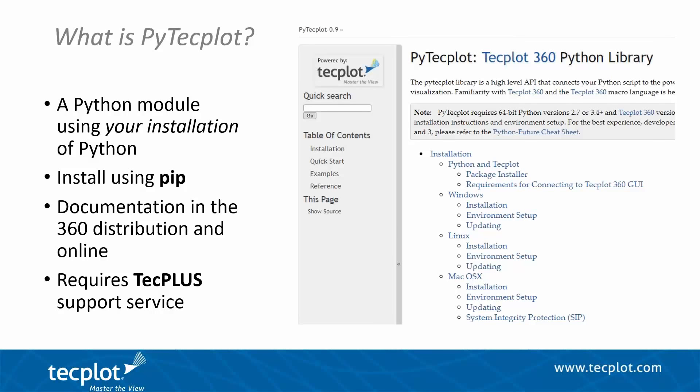PyTecplot is a Python API to Tecplot 360. It's a separate module that you install using your Python installation. We support Python 2.7 and 3.4 and newer. You can do a simple installation using the pip command — if you're familiar with installing other Python modules, it's quite straightforward. It does require an installation of Tecplot 360, and it also requires active maintenance through a Tekplus support contract. Documentation is available in the Tecplot 360 installation as well as online.